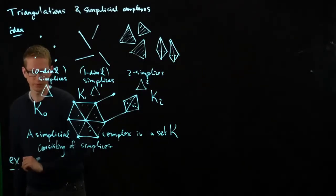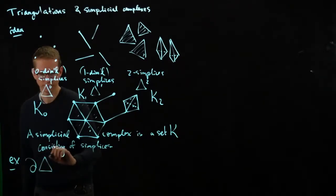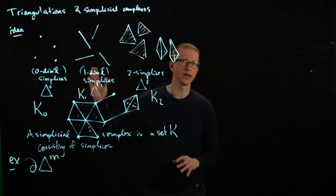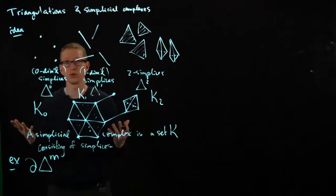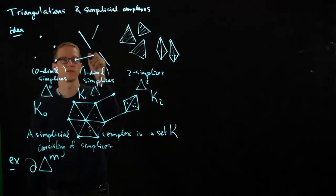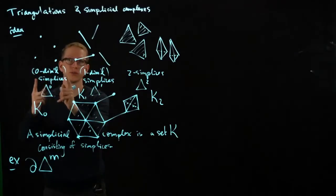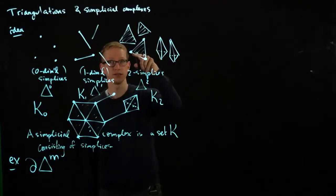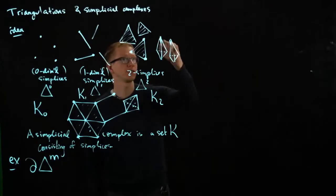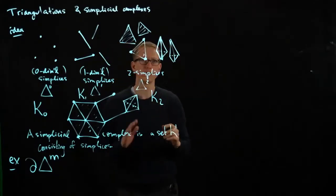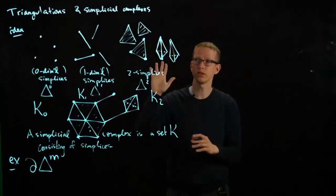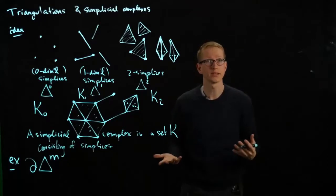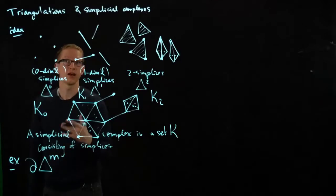Let's look at the example of the boundary of a simplex. The boundary of a zero-simplex is nothing — there is no boundary. The boundary of a one-simplex is the two endpoints, which is a simplicial complex because it's a union of zero-dimensional simplicies. The boundary of a two-simplex is a set of three edges and three vertices, which is also a simplicial complex. The boundary of a tetrahedron is the four different faces, the six different edges, and four vertices — and their union forms a simplicial complex again.